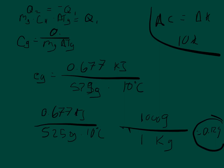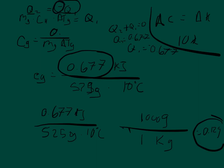One clarification: the result is positive because we end up taking the negative of a negative number. Q1 was a loss of heat, so Q1 = −0.677 kJ. When we compute −Q1, we get −(−0.677) = +0.677. So the negative of a negative gives us a positive value — simple math.